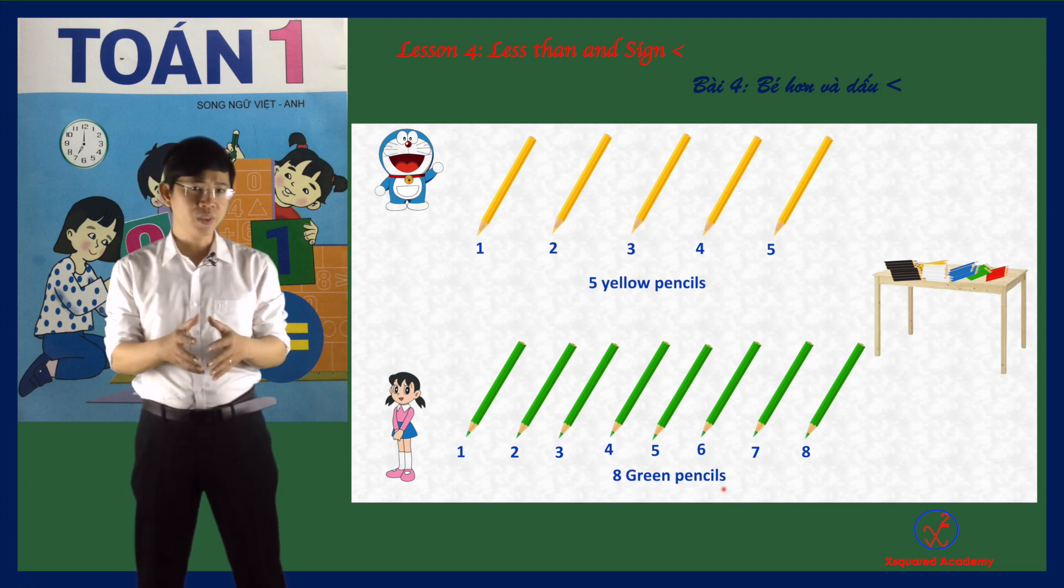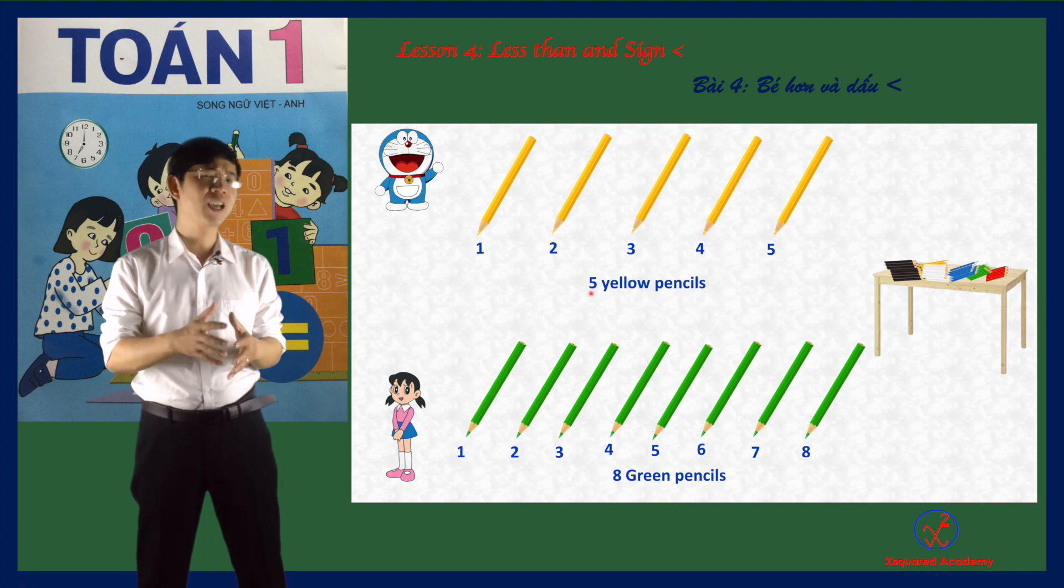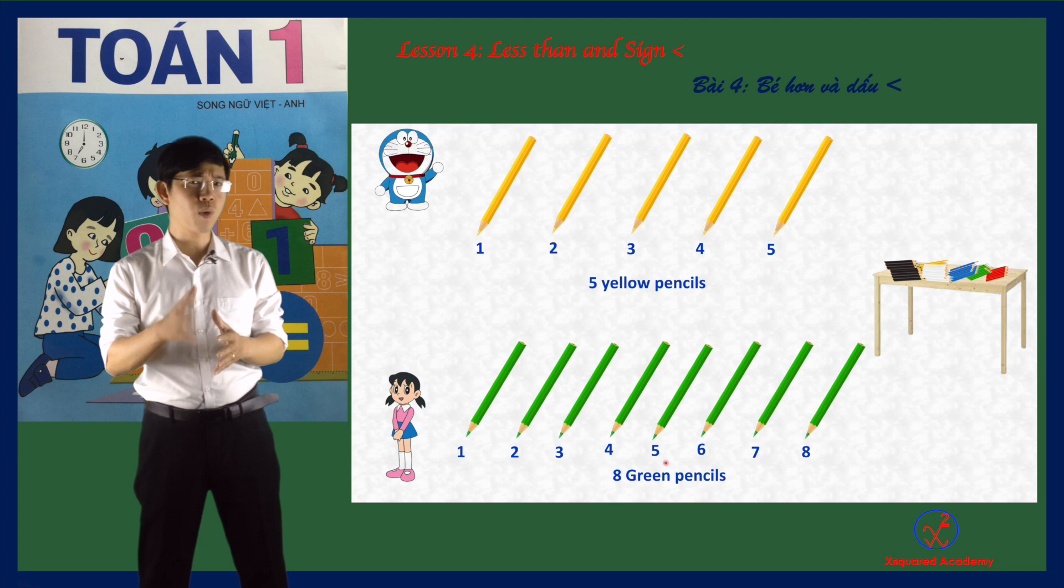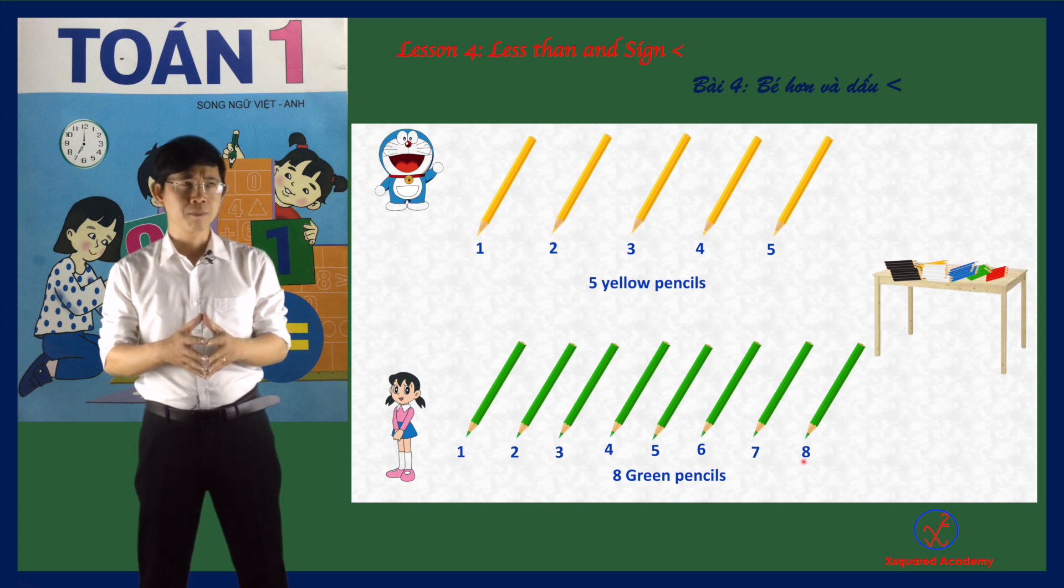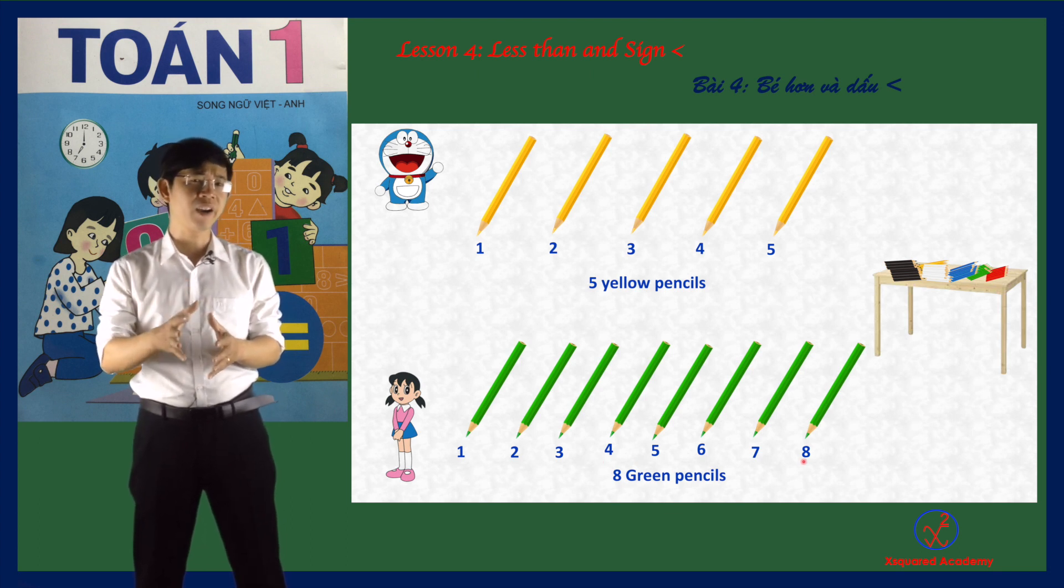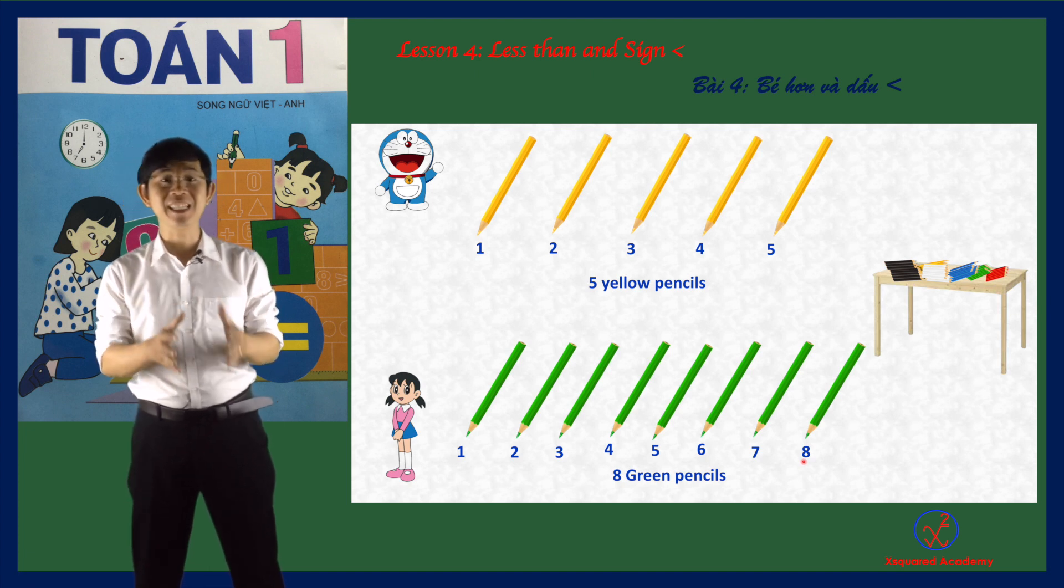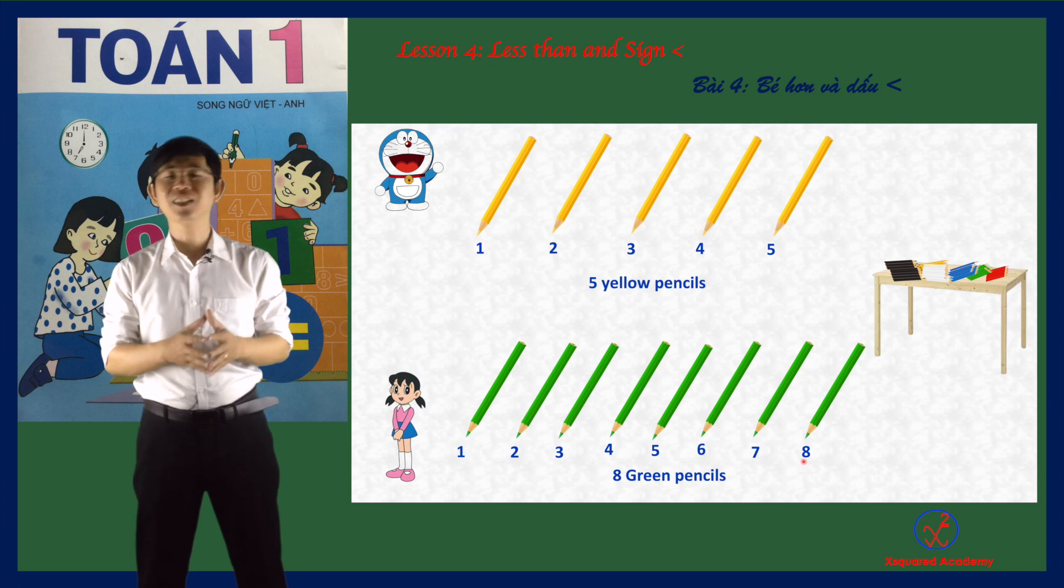Doraemon has five. Because five is less than eight. That means Suka is fatter.